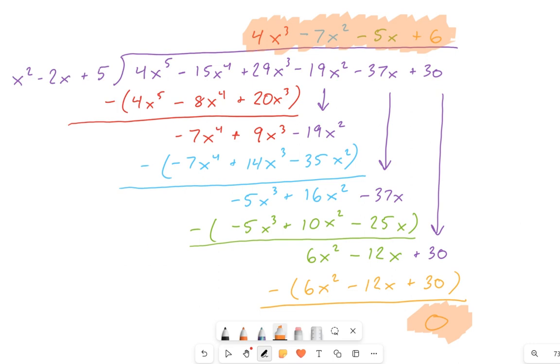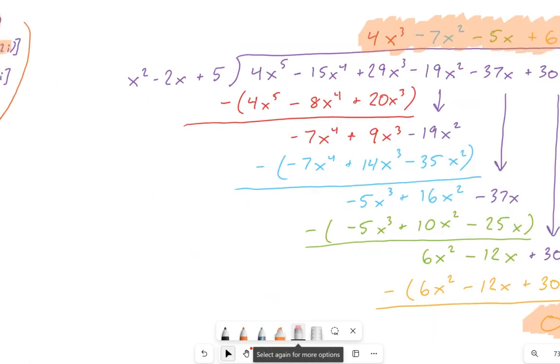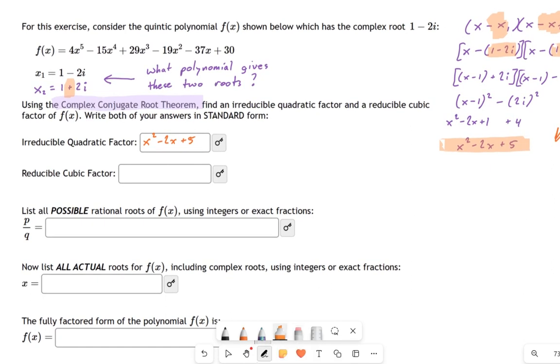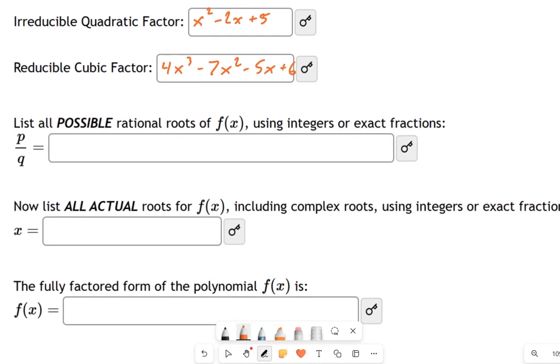If I had to guess what your mistake was without seeing it, I'd say either you made a mistake in all of this long division stuff, or you made a mistake earlier when you were finding the irreducible quadratic factor. Those are the two most likely places. So what I'm going to do is put that cubic factor right here: 4x cubed minus 7x squared minus 5x plus 6 that I found through long division.